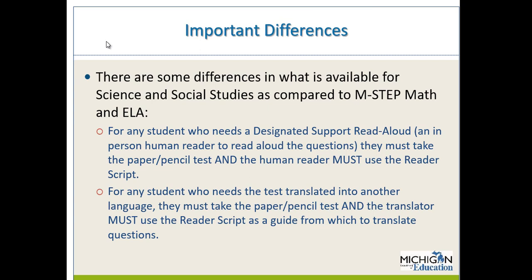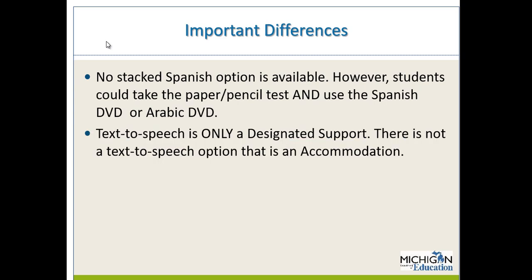There are important differences between what is available for Science and Social Studies compared to M-STEP Math and ELA. For any student needing a designated read-aloud option, they must take the paper-pencil test and the human reader must use the reader script. For any student needing the test translated into another language, they must take the paper-pencil test and the translator must use the reader script as a guide. There is no stacked Spanish option available; however, students could take the paper-pencil test and use the Spanish or Arabic DVD. Also, text-to-speech is only a designated support — there is no text-to-speech accommodation.